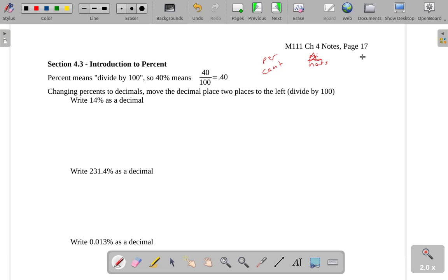In a century, you have 100 years. You have 100 cents in a dollar. So cent means 100. Percent means divide by 100. So if I say 40%, it literally means 40 divided by 100, which is 0.40.